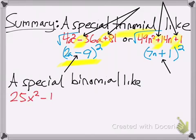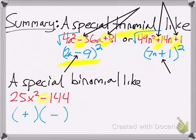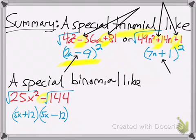The other kind of special case is the special case binomial — the difference of two numbers that are perfect squares, the difference of squares. You know you're going to have opposite signs for your binomial answers. The square root of 144 is 12, and the square root of 25x squared is 5x. Notice: it's the difference of two perfect squares — that's what gives you this answer. The opposite signs are what you always look for.